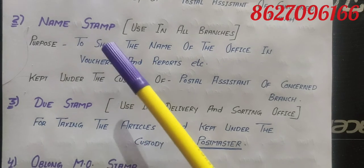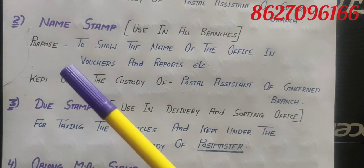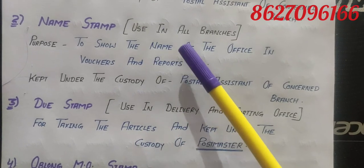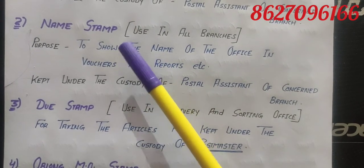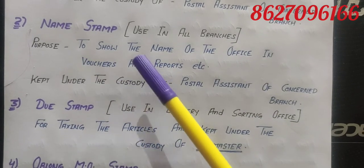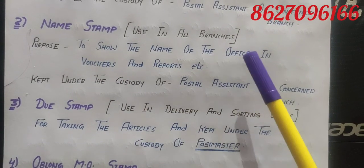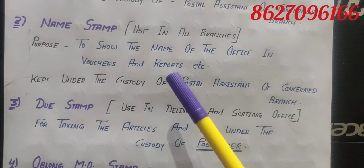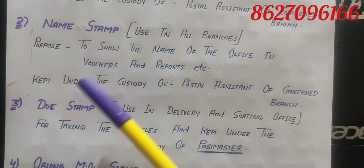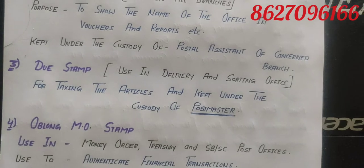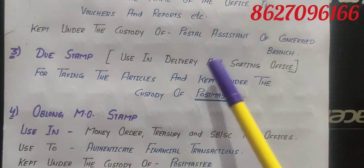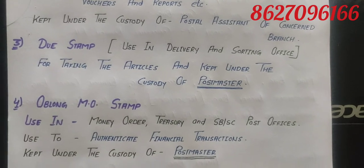After that, we have the name stamp. It is known as the name stamp, and the branch name will be written on the stamp. It is used in all branches. Its purpose is to show the name of the office in vouchers and reports. You will use it and put it into account. It is also kept under the custody of the Postal Assistant of the concerned branch.